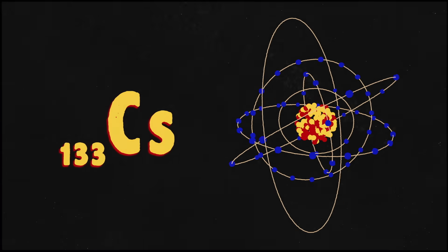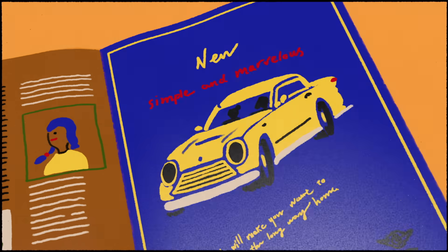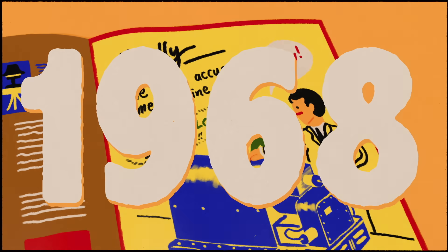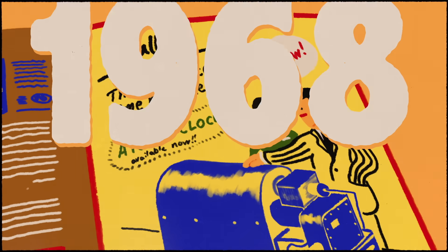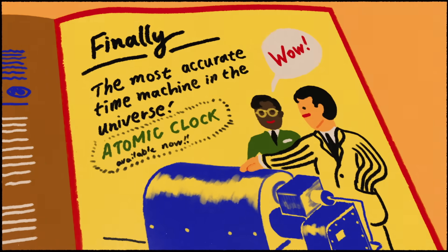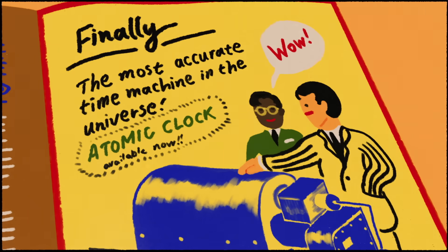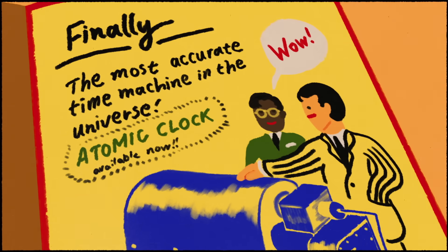Cesium was already a popular element for atomic clock research, and by 1968, some cesium clocks were even commercially available. All that was left was to determine how many ticks of a cesium atom were in a second.